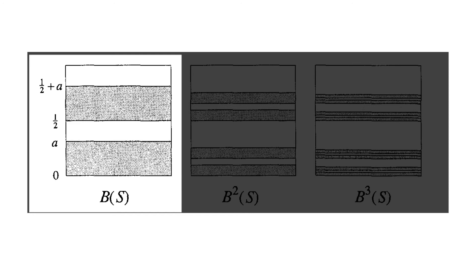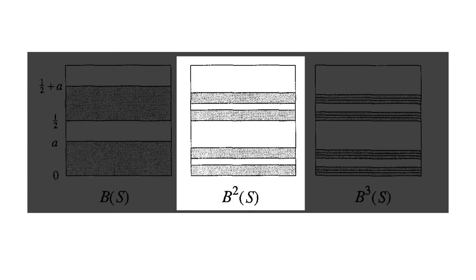Anyways, you can see what happens here after another iteration. Take S, the unit square, and apply B to it, and now the square has been mapped to these two shaded strips, both of height a. Apply the map again. Take this picture, flatten it by a factor of a, and then cut it along the center and stack. You should now obtain the center picture, hence four strips of height a squared. The procedure continues so that for B cubed of S, we now have eight horizontal strips of height a cubed.